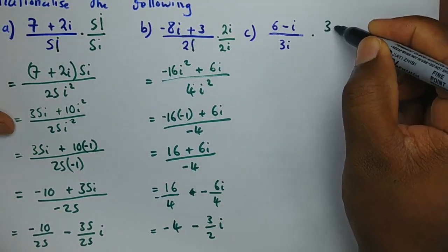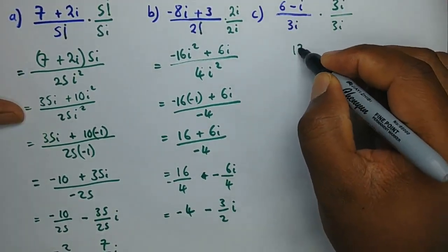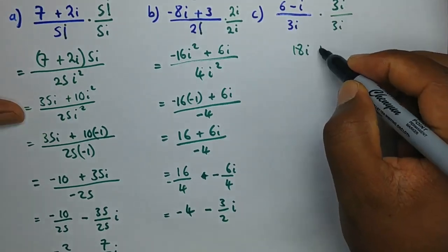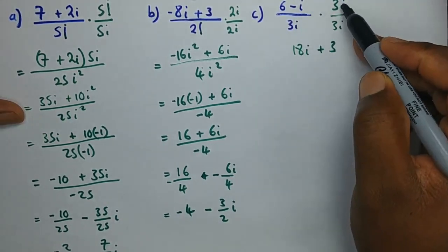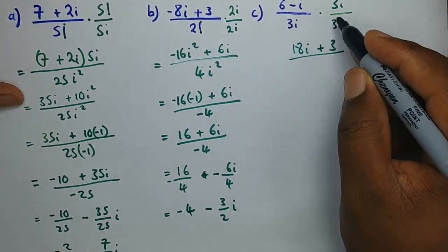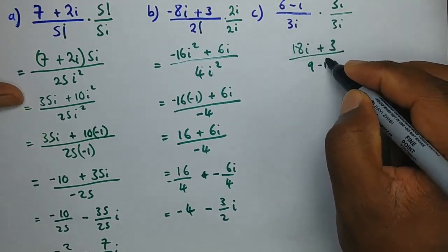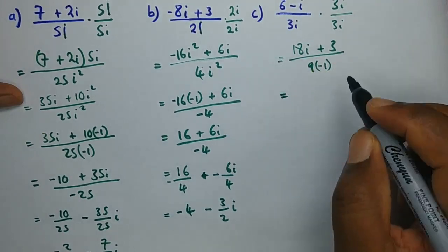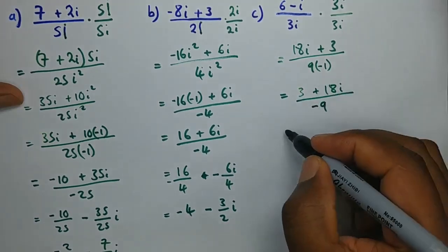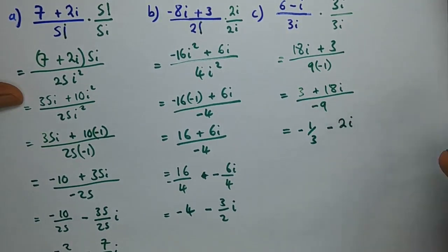For the next example, we multiply by 3i over 3i. We get 6 times 3i giving 18i, and negative i times 3i: since i times i gives i² which is negative one, the negatives cancel to give positive 3. So 3 times 3 is 9. With i² equal to negative one, this reduces to 3 plus 18i over negative 9, which simplifies to negative 1 over 3 minus 2i.